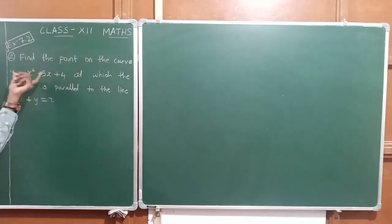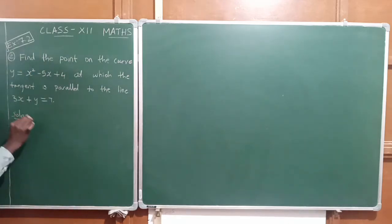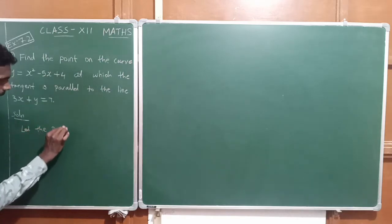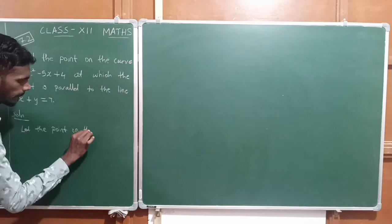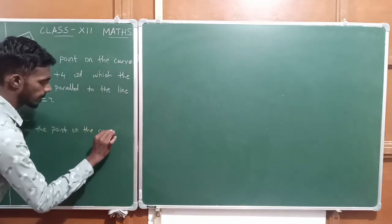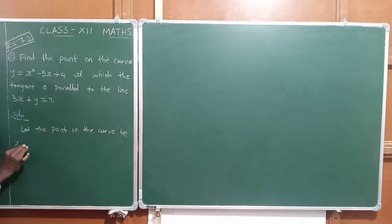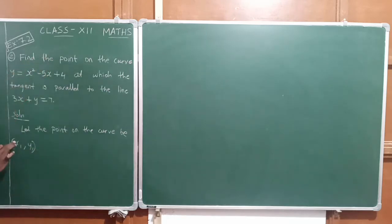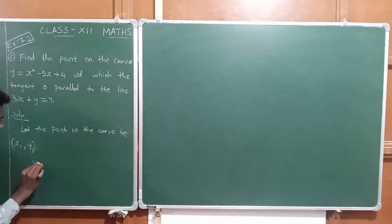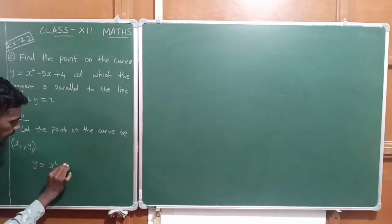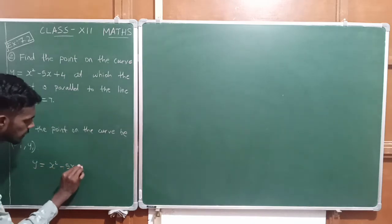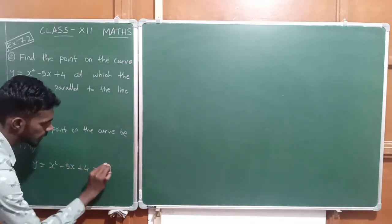We have to find the point on the curve. So let us find the solution. Let the point on the curve be x1 comma y1. In the point x1 comma y1, the given equation is y is equal to x square minus 5x plus 4. Let it be equation number 1.